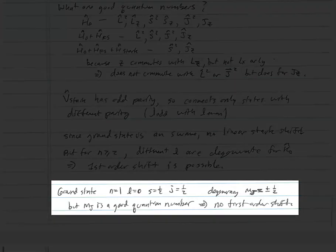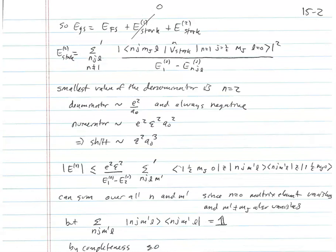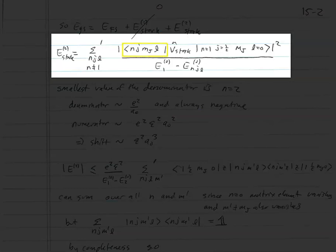For the ground state, we have n=1, l=0, s=1/2, and j=1/2, with a degeneracy in mj = ±1/2. mj is a good quantum number, which means there's nothing that can couple to it, so there's no first-order shift. To get the second-order shift, we go to perturbation theory. It's not really degenerate perturbation theory, because mj is a good quantum number, so we already know the proper basis — it's the states with definite mj.